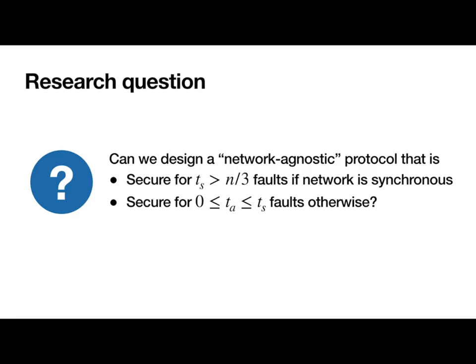So thinking about these different choices led us to the following question: Is it possible to design a protocol that tolerates strictly more than N over 3 faults if the network happens to be synchronous for a fixed value of delta, and still tolerate some lower number of faults if the network is asynchronous?